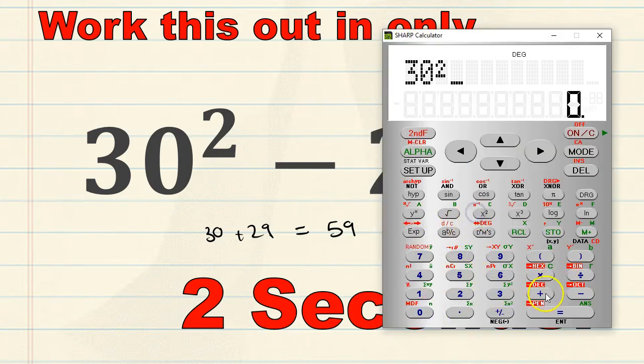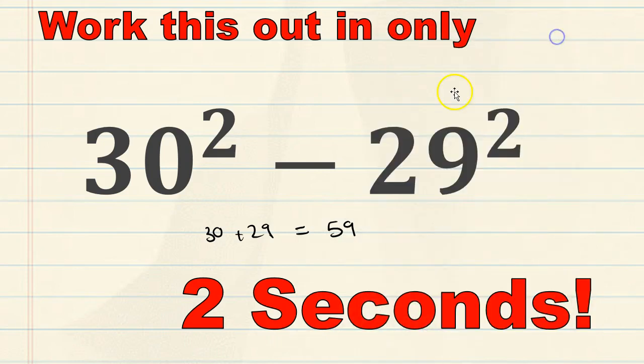30 squared minus 29 squared does equal 59. Now, first of all, this will only work if the two numbers that you are squaring are one number apart.